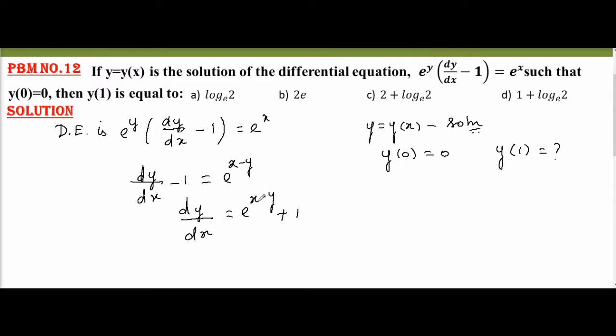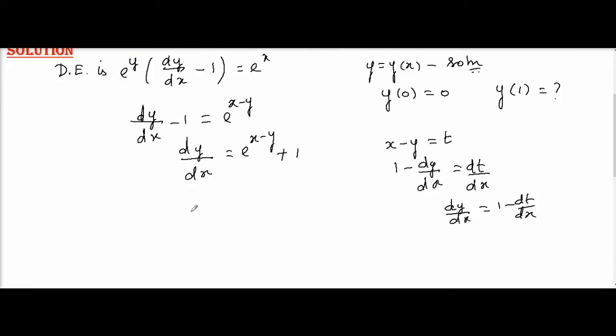Now, x minus y is equal to some t. Therefore, when you differentiate, it is 1 minus dy by dx equal to dt by dx. Otherwise, I can say dy by dx is equal to 1 minus dt by dx. So, let me substitute this in the given equation. I get 1 minus dt by dx equal to e power t plus 1. Here, 1 and 1 gets cancelled both sides.